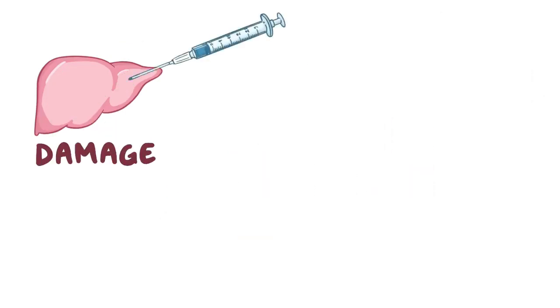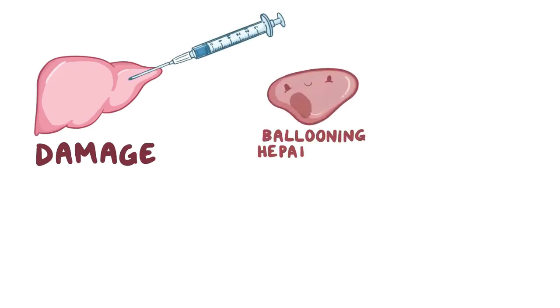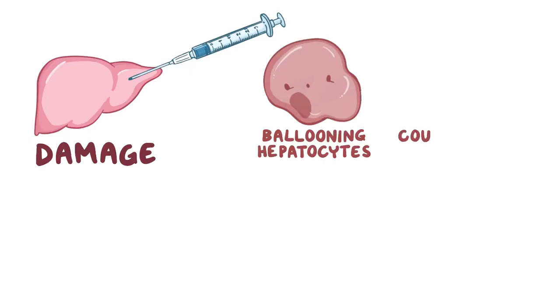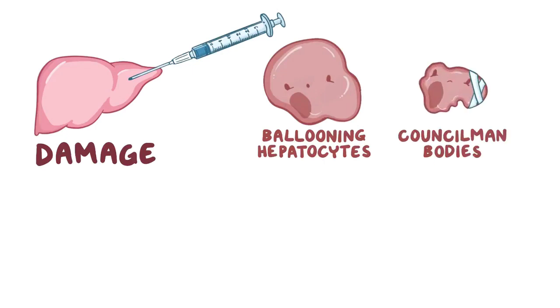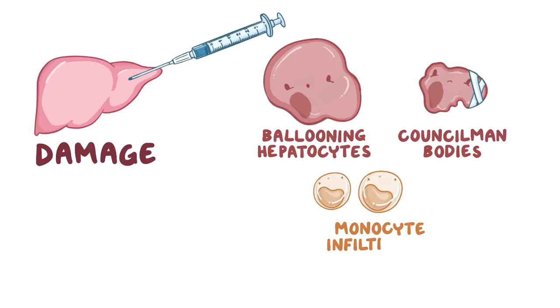This results in liver damage. On a liver biopsy, liver damage translates as ballooning hepatocytes, which are about to enter apoptosis, and Councilman bodies, which are shriveled dying hepatocytes, and there is also monocyte infiltration.